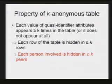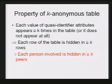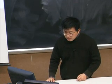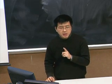Clearly, if a table has this property, we can ensure that each row of the table is hidden among at least k rows. In other words, each person involved is hidden among at least k peers. This is the basic idea of k-anonymity.